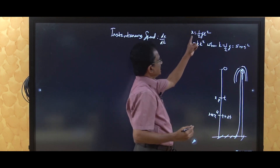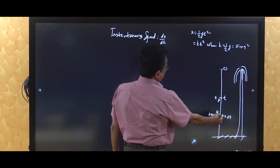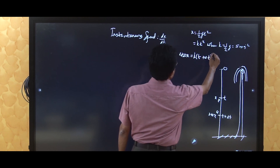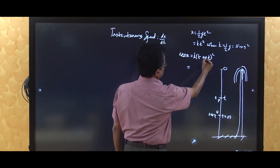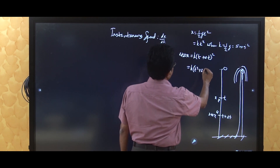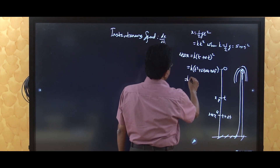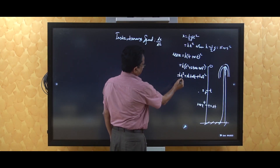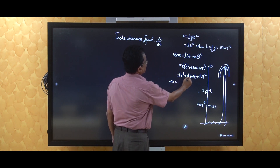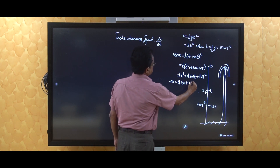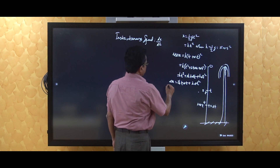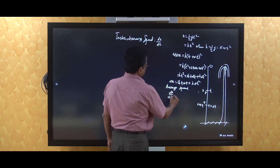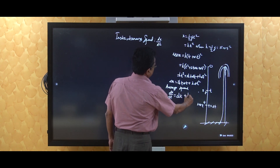After a small interval of time, x plus delta x equals k times (t plus delta t) squared. Using the expansion (a + b)² = a² + 2ab + b², this becomes k t squared plus 2kt delta t plus k delta t squared. Canceling k t squared and x, we get delta x equals 2kt delta t plus k delta t squared. The average speed over the small interval pq is delta x by delta t, which equals 2kt plus k delta t.